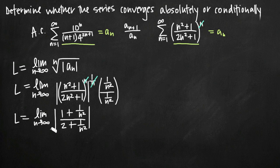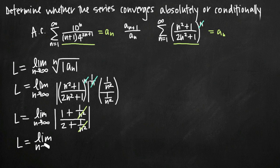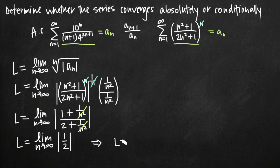As n goes to infinity, the terms 1/n squared and 1/n squared both go to 0, since a constant divided by a very large number approaches 0. We're left with 1 over 2, so the absolute value of 1/2 is just 1/2. The limit as n goes to infinity of 1/2 is still 1/2, so l equals 1/2.